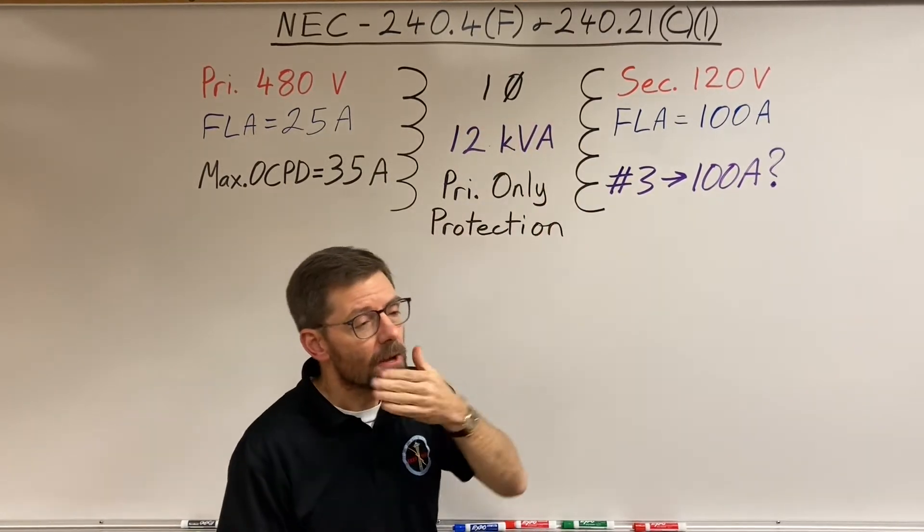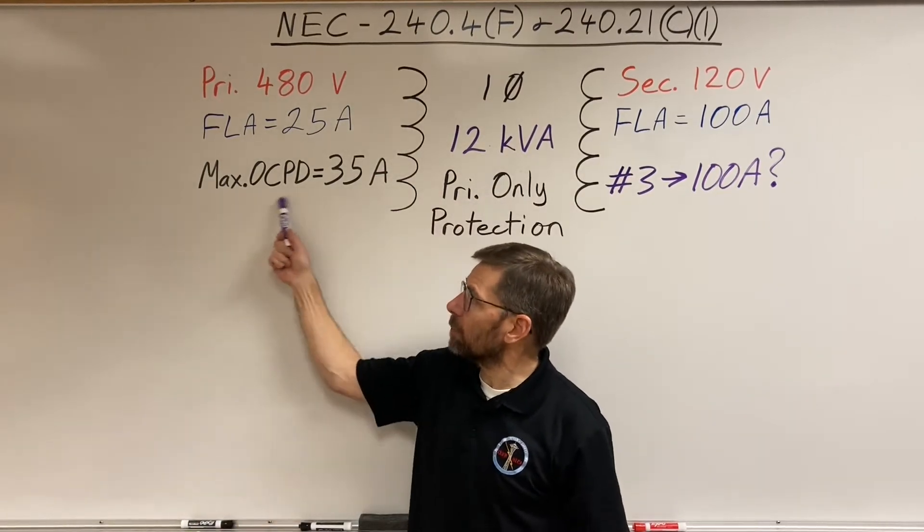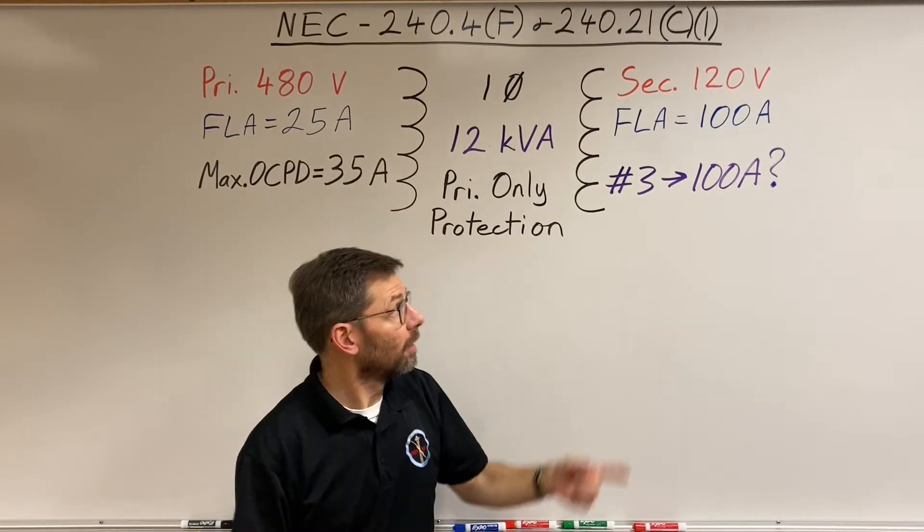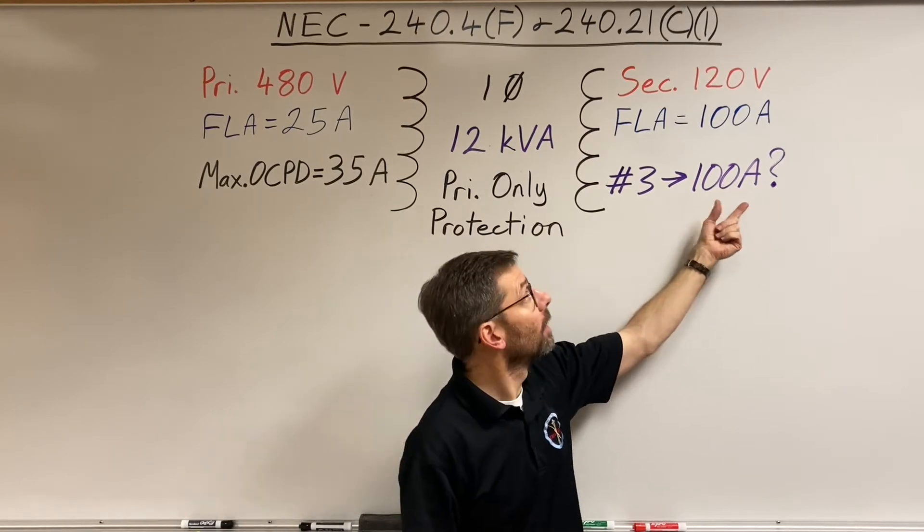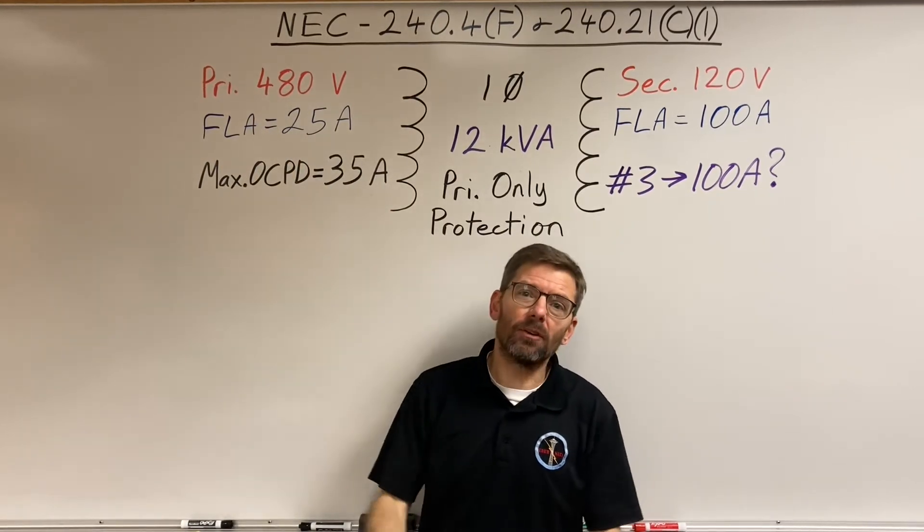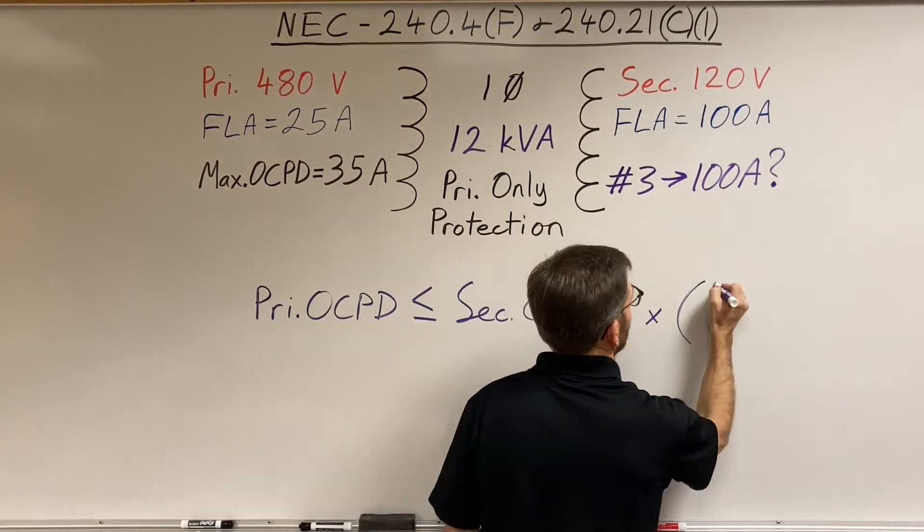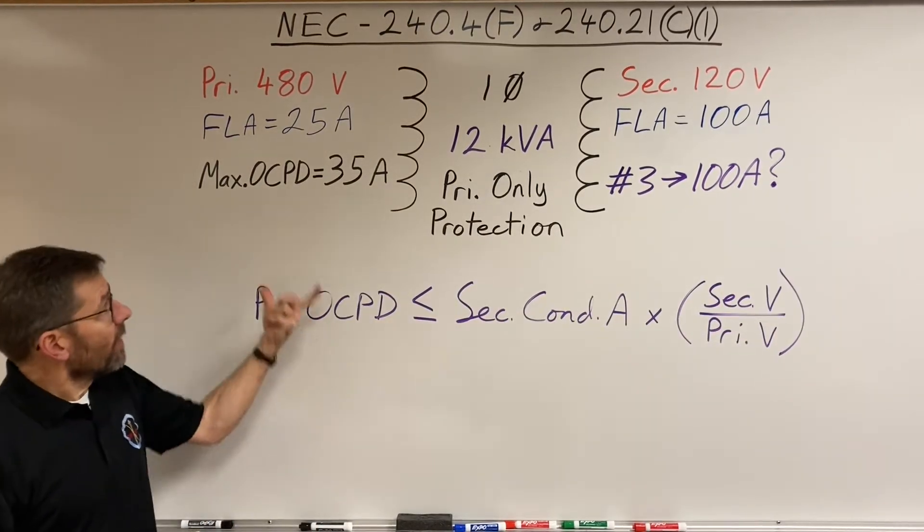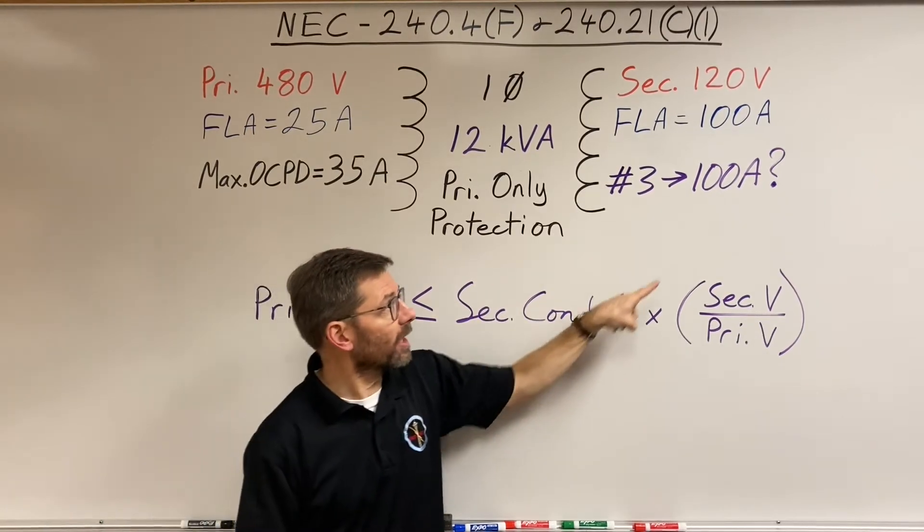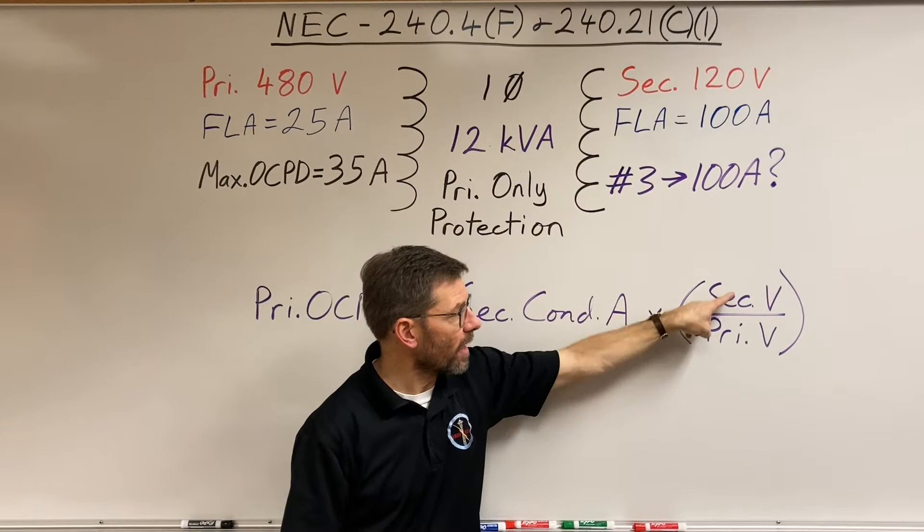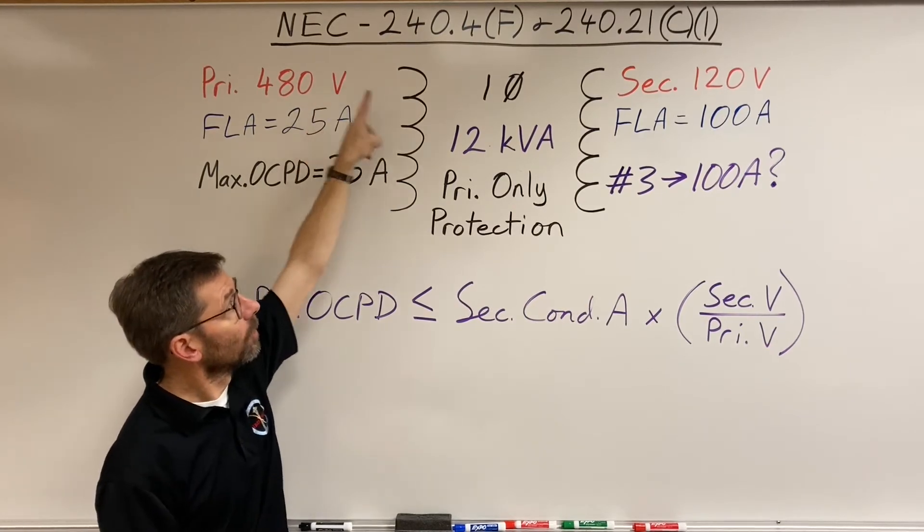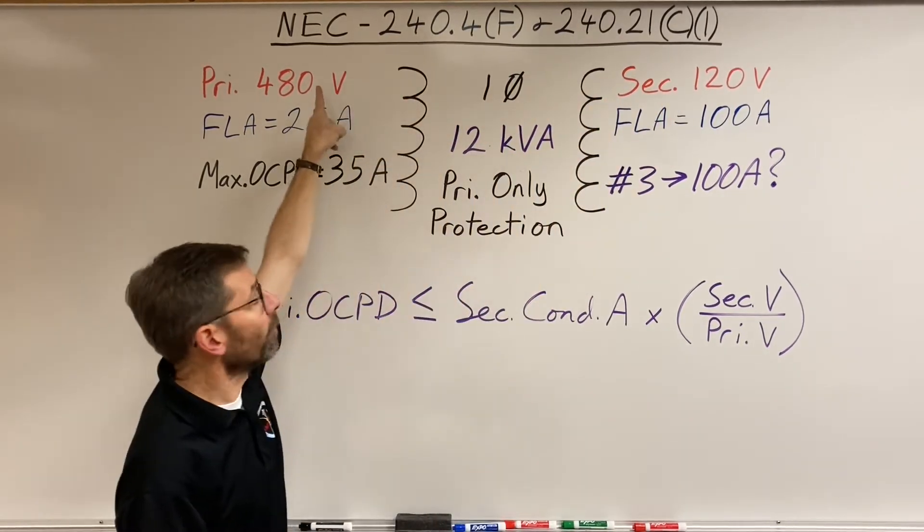Because those two code sections have this language. The overcurrent protective device cannot exceed the value that is determined by multiplying the secondary conductor ampacity by the secondary to primary voltage ratio. That's a mouthful. Let me write it out. The overcurrent protective device has to be less than or equal to the secondary conductor ampacity times the ratio of 120 volts to 480 volts. What is that ratio? 120 over 480 is about a quarter.